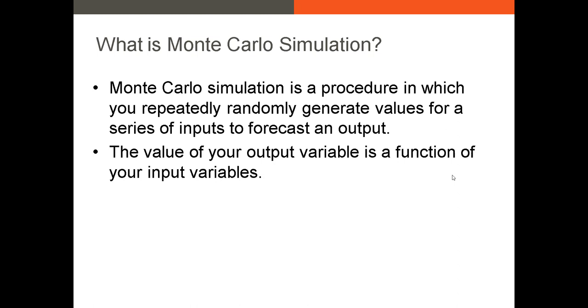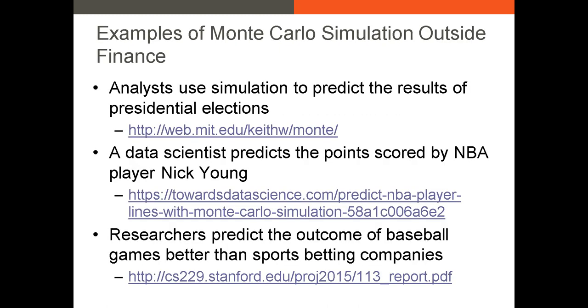In Monte Carlo simulation, you assume one or several variables are random variables, meaning that they can take many different values. You assign a probability distribution to each input and randomly generate numbers for that input based on the probability distribution. The output of this simulation will depend on the input values. You repeat this simulation many times. I often use 10,000 simulations as my default, and the result of this Monte Carlo simulation is a histogram of outcomes for your output variable.